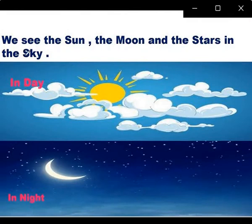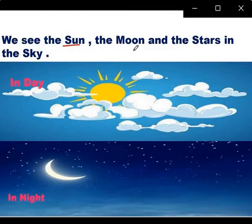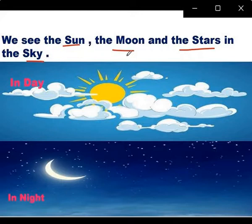See. We see the sun, the moon, and the stars in the sky. So, where do we see the sun, the moon, and the stars? In the sky. Yes.